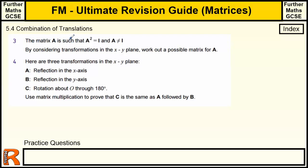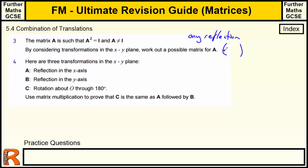Question three: matrix A is such that A squared equals the identity matrix I, but A is not equal to I. By considering transformations in the x-y plane, find a possible matrix A. We want something where doing it twice brings us back to the start — any reflection works. One example: swapping x and y, so (1,0) goes to (0,1) and (0,1) goes to (1,0), giving the matrix [[0,1],[1,0]]. That works.